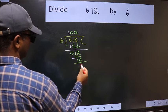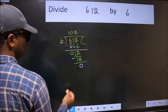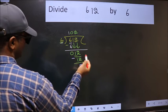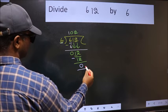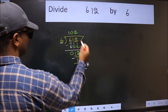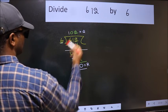We get zero. No more numbers to bring down, so we stop here. This is our remainder and this is our quotient.